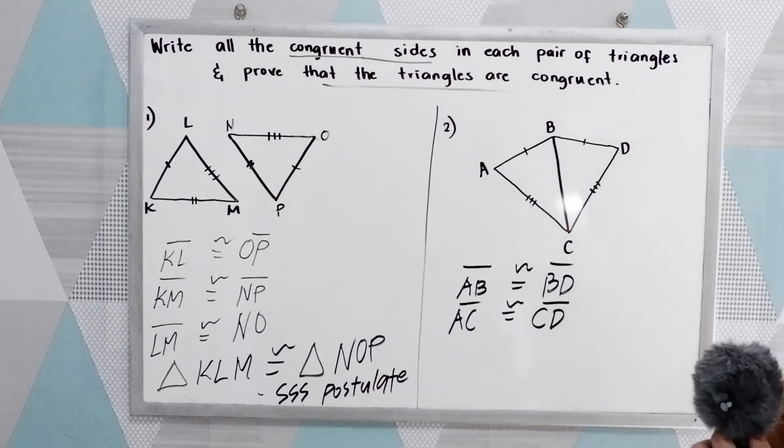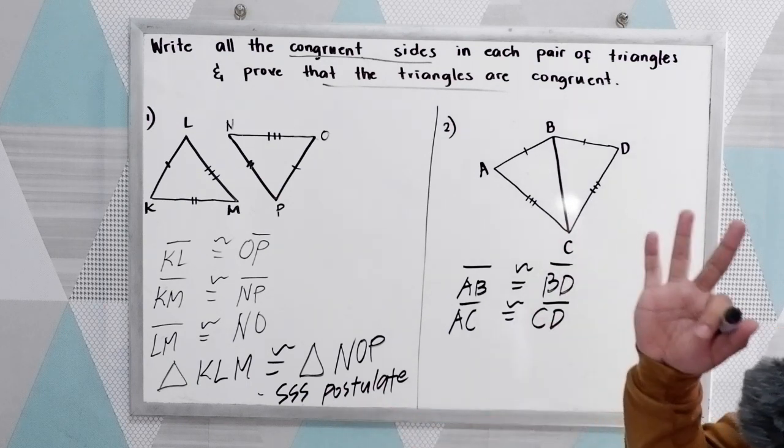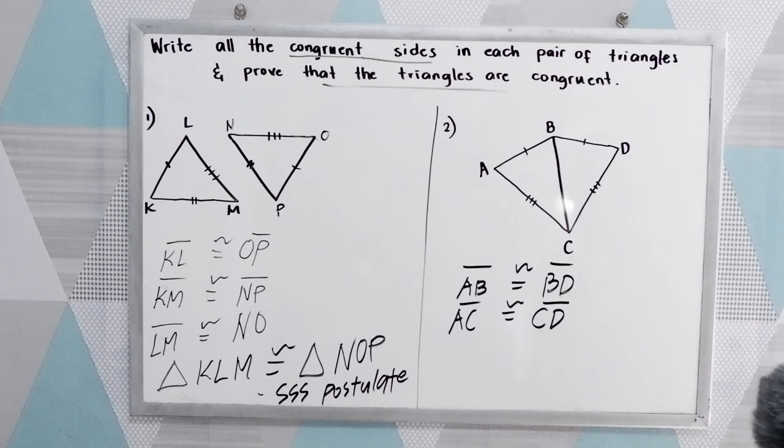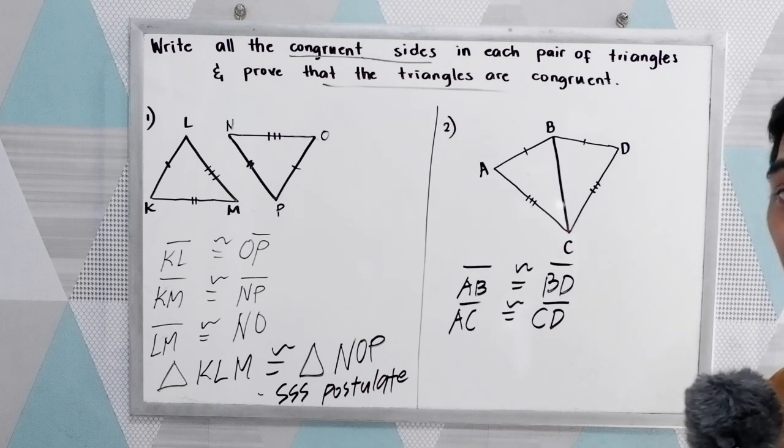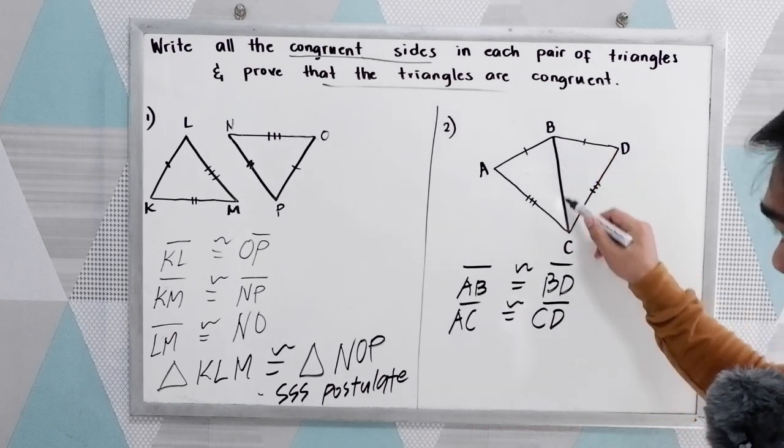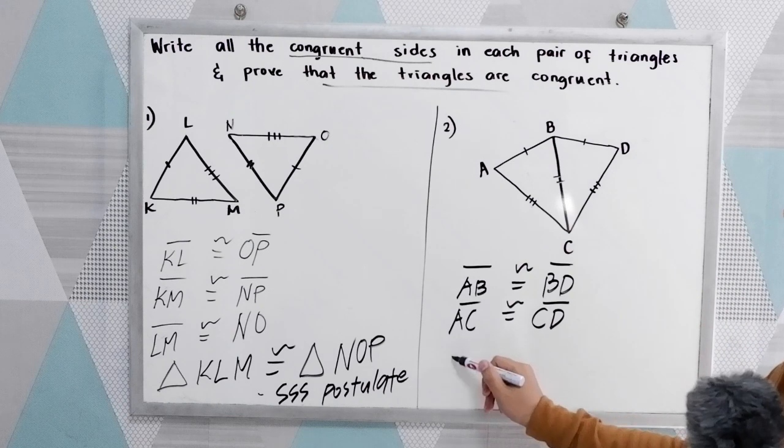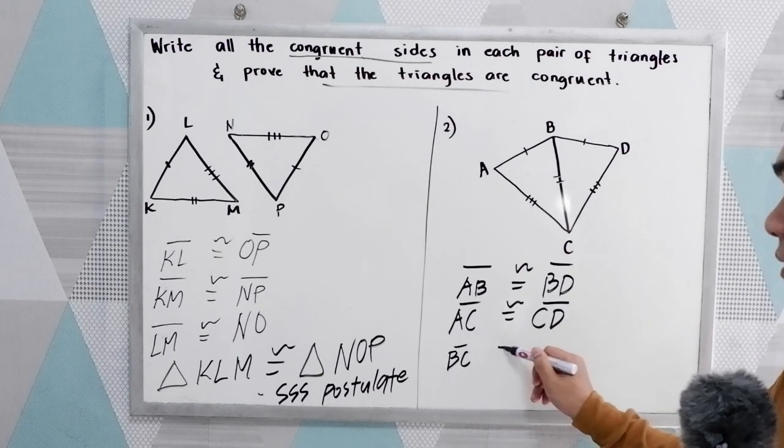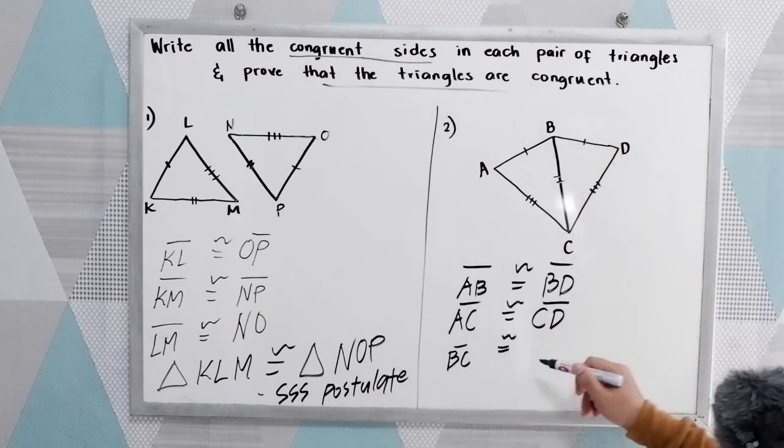So, using the SSS postulate, we need three sides. So, we know that by reflexive property of congruence, reflexive property of congruence, BC is congruent to BC.